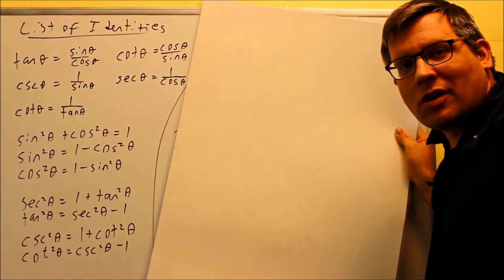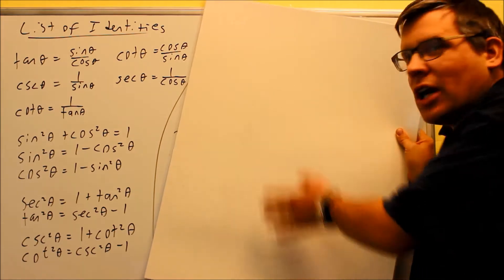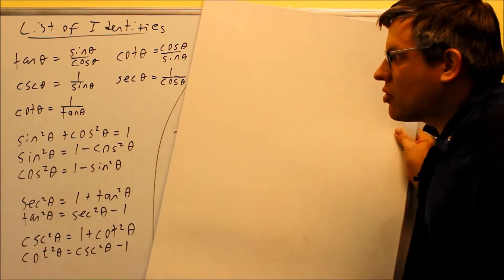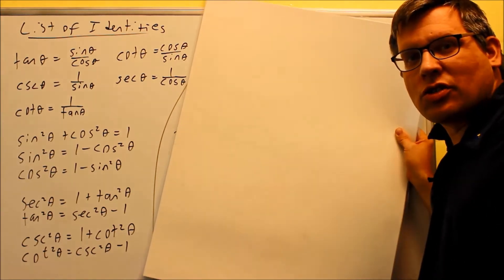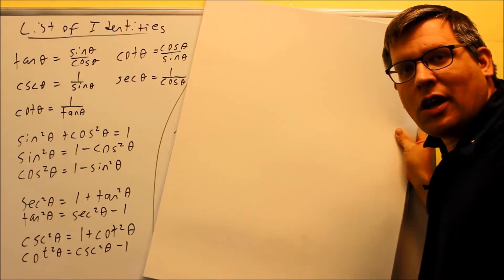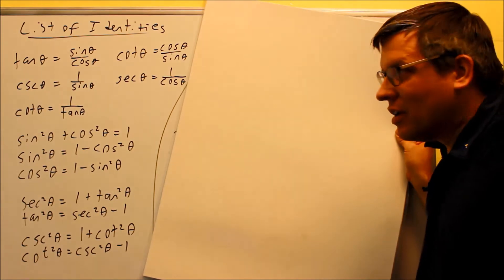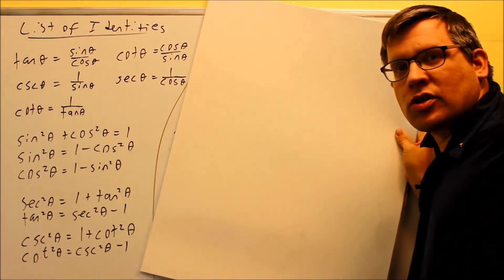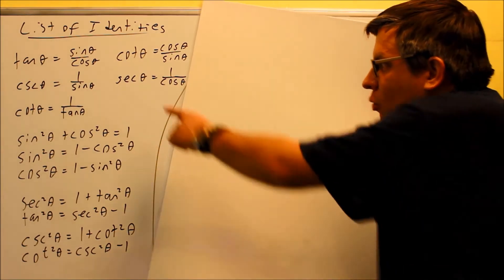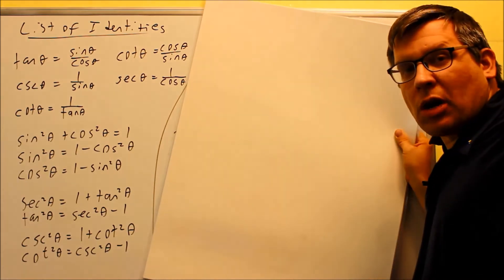Before we get into solving the trig identities, that's why I have this part covered up here, we're going to first talk about a list of identities. Now these are identities that we've talked about already in this class, and these are ones that come directly from the unit circle. This is a list of ones that we've already done before in the past.